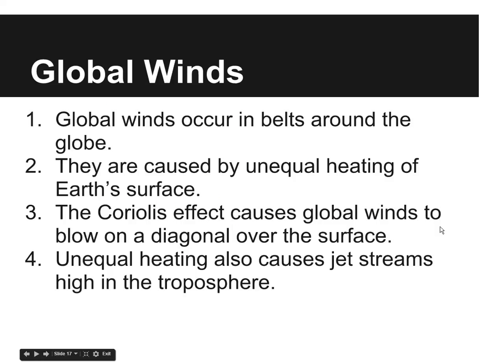Global winds, like the name implies, occur on a much larger scale than local winds — in belts around the globe. These are caused by unequal heating of Earth's surface. The Coriolis effect, which we'll talk more about in our atmosphere unit, causes global winds to blow on a diagonal over the surface because of the spinning of the Earth. Unequal heating also causes what's known as the jet stream higher up in the troposphere, which we'll go into in greater detail in our atmosphere and weather units.